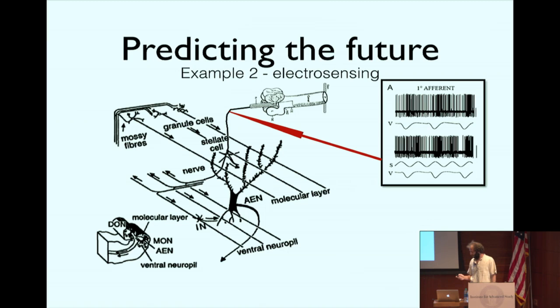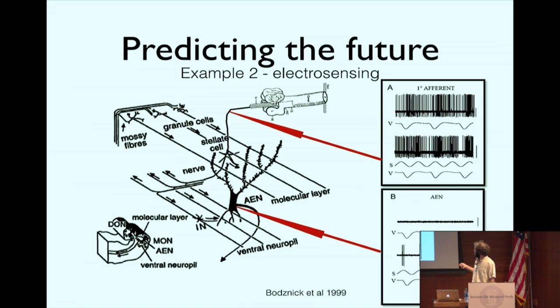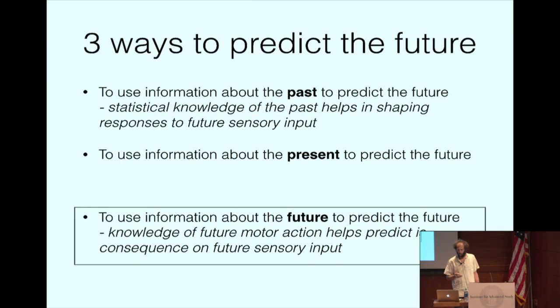You can see very nicely, if you record from these neurons, their spiking activity. If it's just ventilating, they have no output. And you add this sine wave and it's only spiking when the sine wave is at its peak. I think the conclusion is that the knowledge of future motor actions helps to predict the consequence of these actions on the sensory input. And that can be used in order to cancel out what's not interesting. This is kind of building this model of the world and comparing that to what you actually get in.